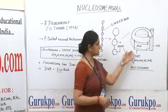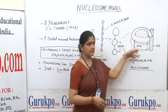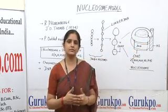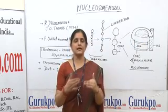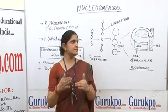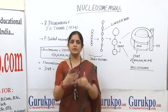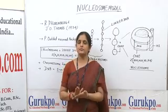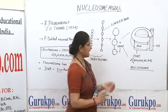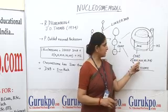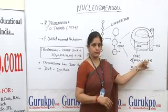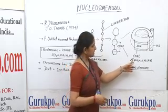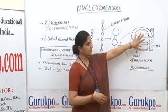What is inside this structure? There is a core particle in the center. As we know, in structural organization, DNA along with histone proteins are responsible. Histone proteins are mainly responsible for the structural organization of DNA inside the chromosome. There are five types of histone proteins, out of which H2A, H2B, H3, and H4 — these four histone proteins are present in pairs and together form the core particle.